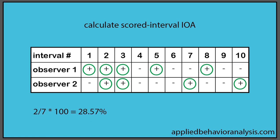So you're going to have 2 divided by 7 times 100, in which now your scored interval inter-observer agreement is 28.57%. Thank you.